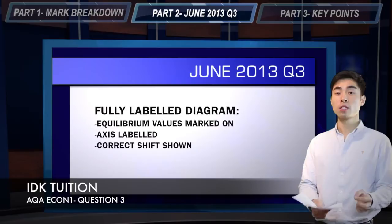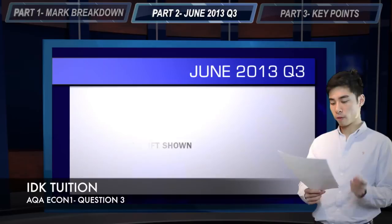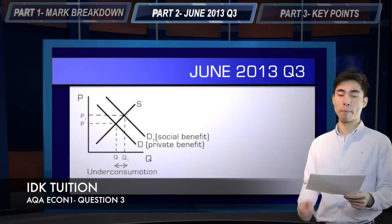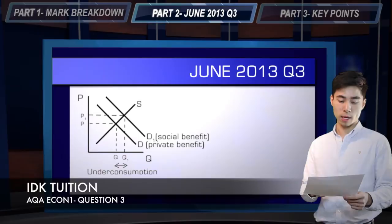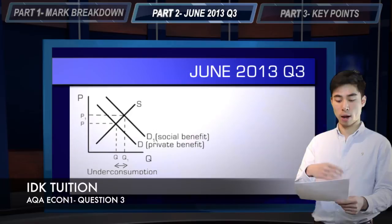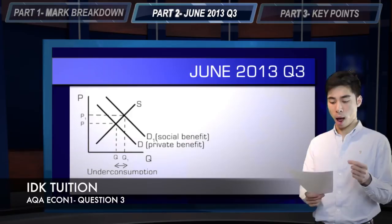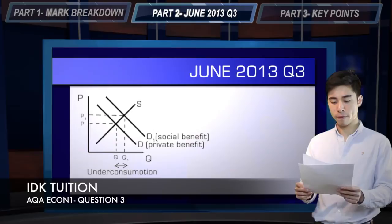Make sure your curves are correct — that's the hardest part of the question, as it shows whether you actually understand the question. In this case we're looking at positive externalities, and there are a number of different ways you can represent a positive externalities diagram. What I would go for is something that looks like this: your marginal social benefit and marginal private benefit curve. You could also just label these D and D1, but make sure you clearly differentiate between the two — D1 is your marginal social benefit curve where external benefits are included, whereas D is just your marginal private benefit curve, which only takes into account private benefits.